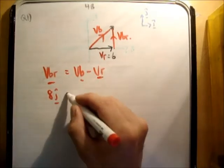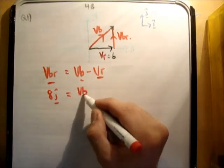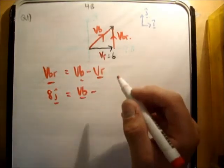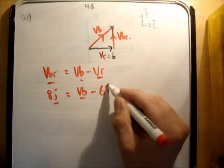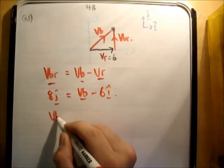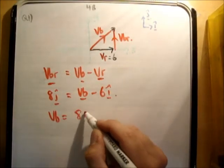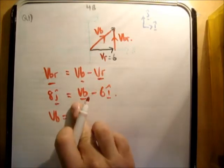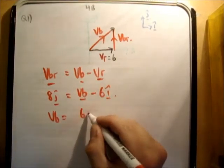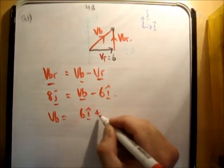And the velocity of the boat, we don't know. Minus the velocity of the river. The velocity of the river is equal to 6i hat. So, therefore, the velocity of the boat is equal to... Actually, I'll turn that around. We'll say 6i hat plus 8j hat.